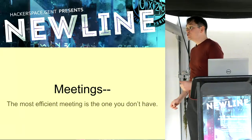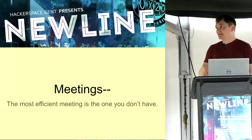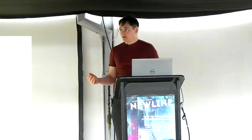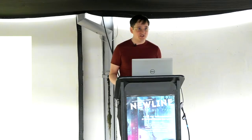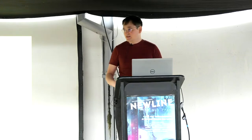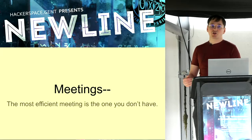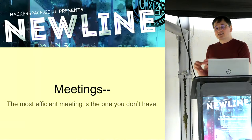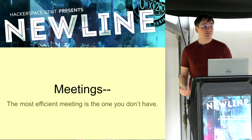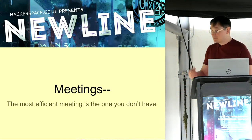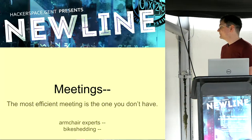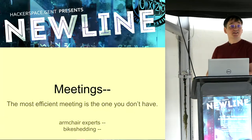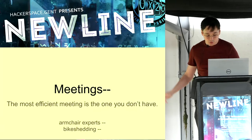The most efficient meeting is one without many people. When people first come to the hackerspace and want to change something, they call a meeting to ask how to do it. Instead, we tell them: just change it. If people complain so much they want it reverted, then you can have a discussion. But most things — even if people don't like them — they won't dislike them enough to actively ask for reversal. This reduces armchair experts who have opinions on everything but don't get their hands dirty, and reduces bike shedding.